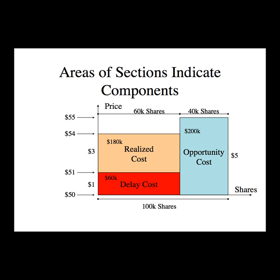There are 40,000 shares that weren't sold at all. The difference between the cancellation price of $55 and the initial price of $50 is $5, and there are 40,000 shares. So the area of that rectangle is 40,000 × $5 = $200,000. That is the opportunity cost.